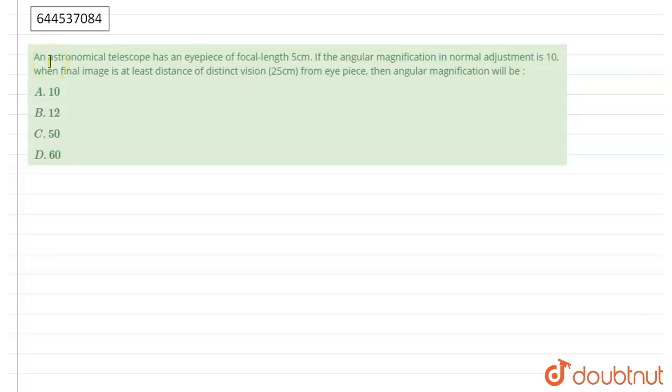According to the question, an astronomical telescope has an eyepiece focal length of 5 centimeters. So Fe is 5 centimeters, and the angular magnification in normal adjustment is 10.